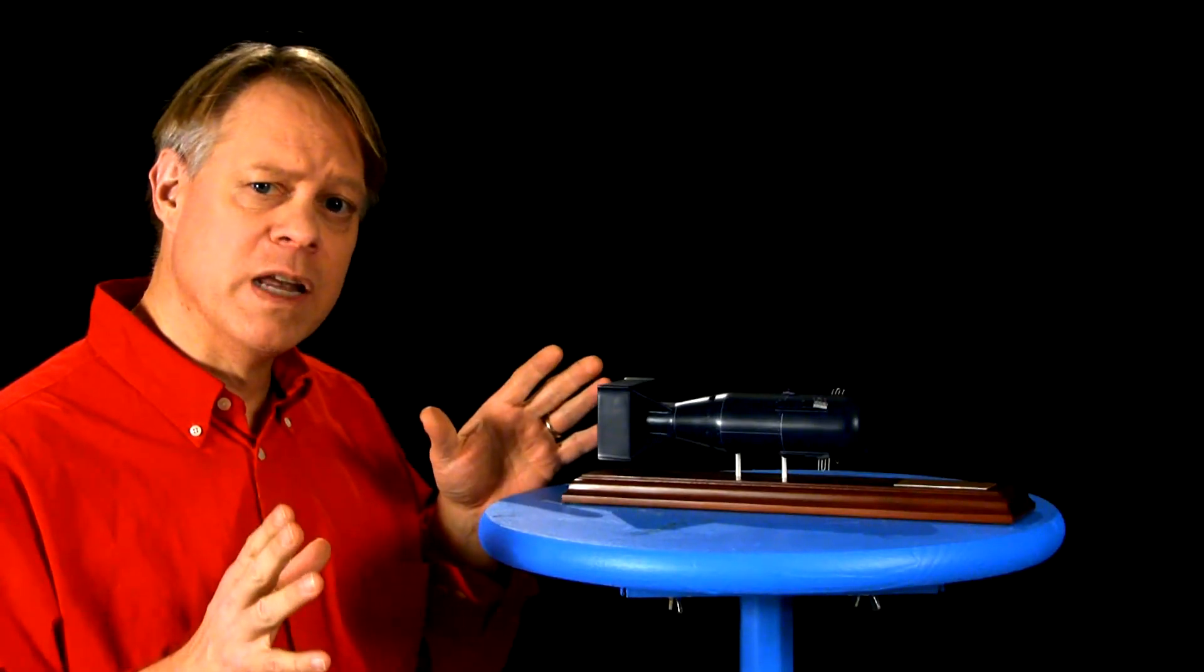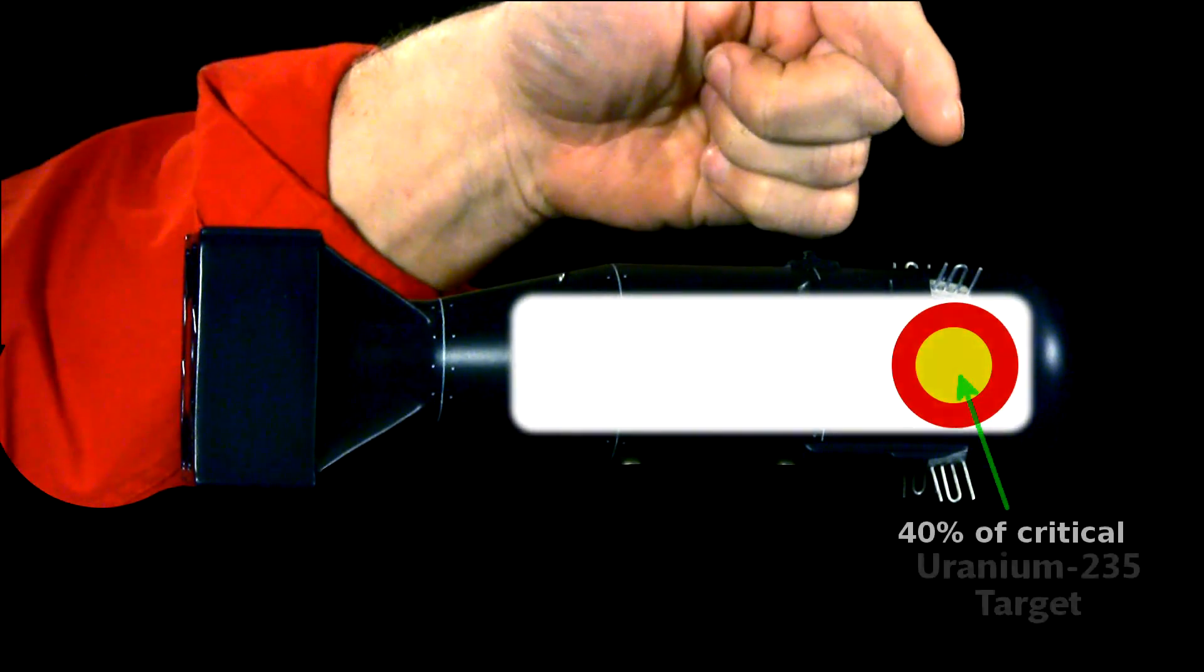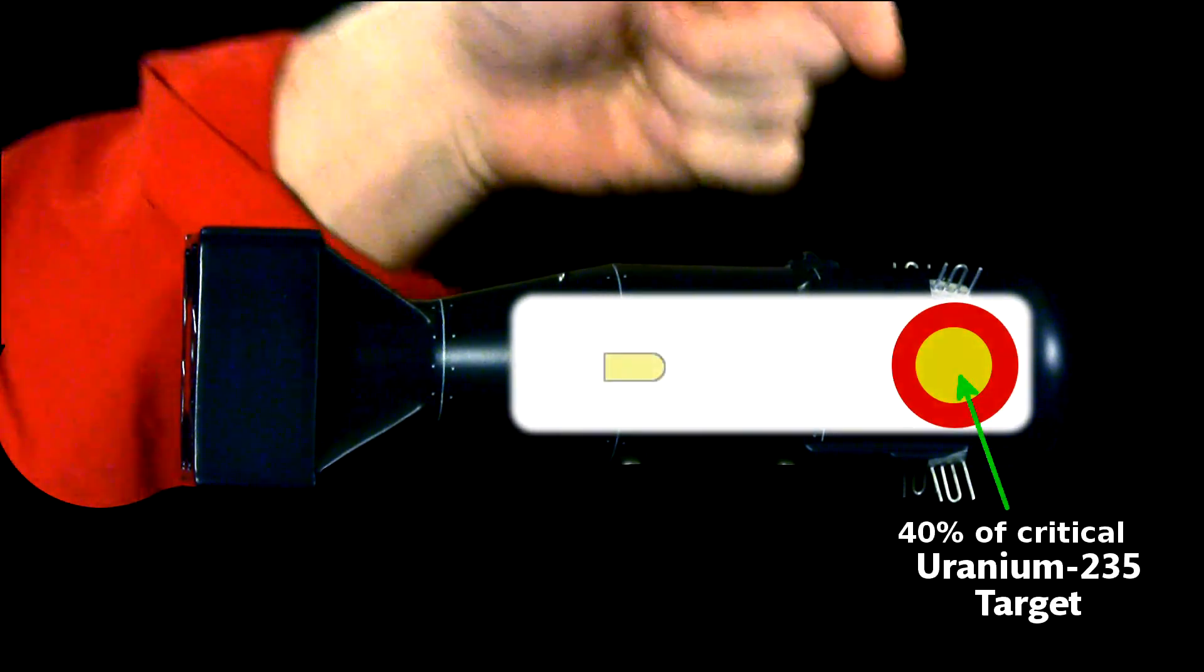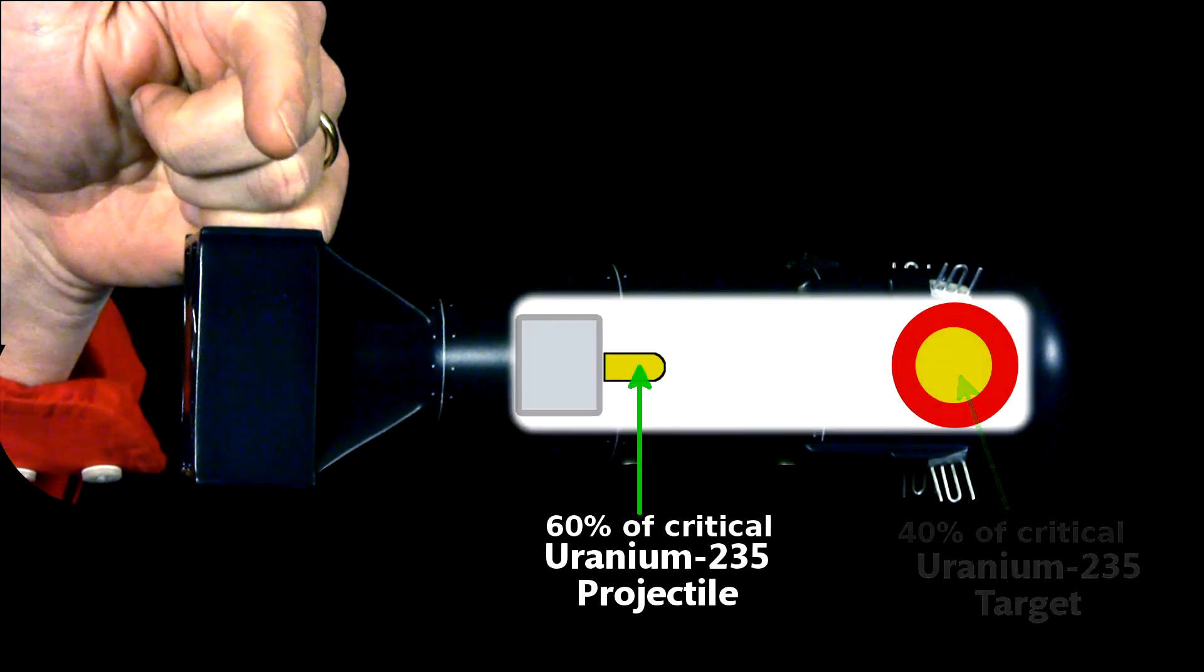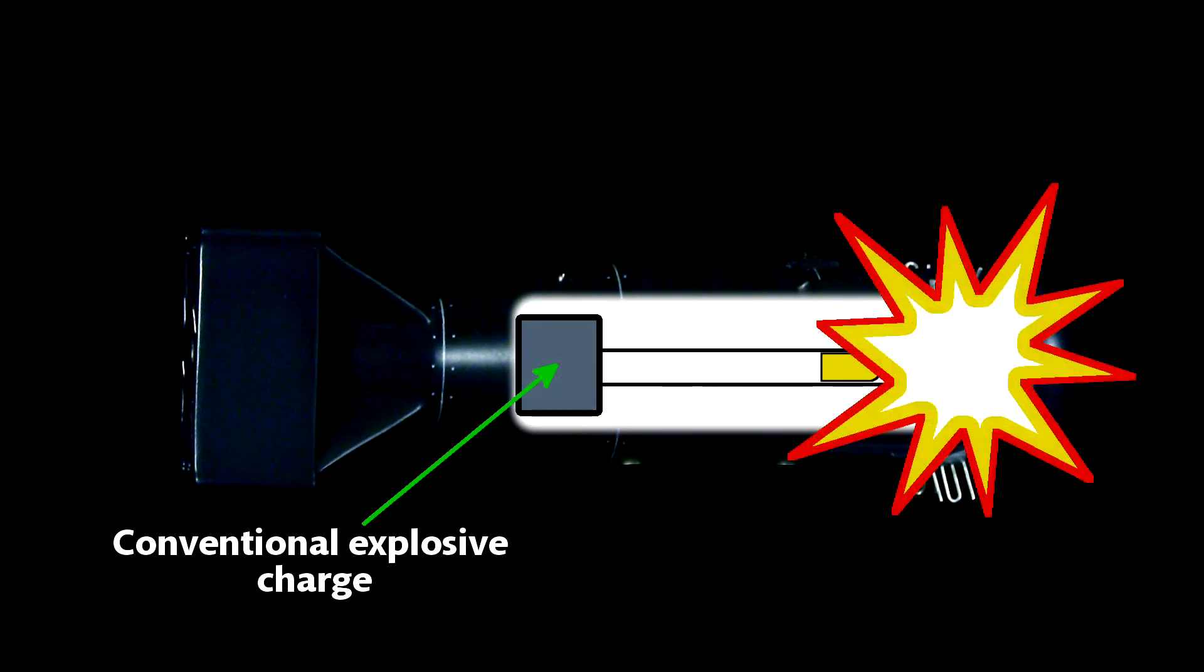The bomb's designers divided the amount needed into two pieces. At the tip, they placed about 40% of the necessary uranium. They loaded the remaining 60% at the other end. A conventional explosion drove the projectile into the target, initiating the nuclear explosion.